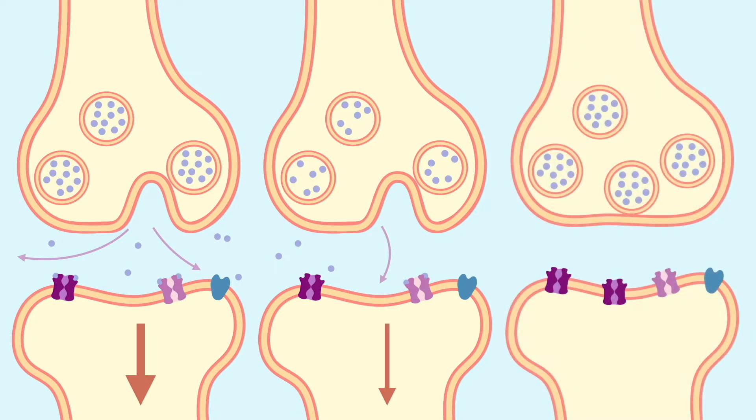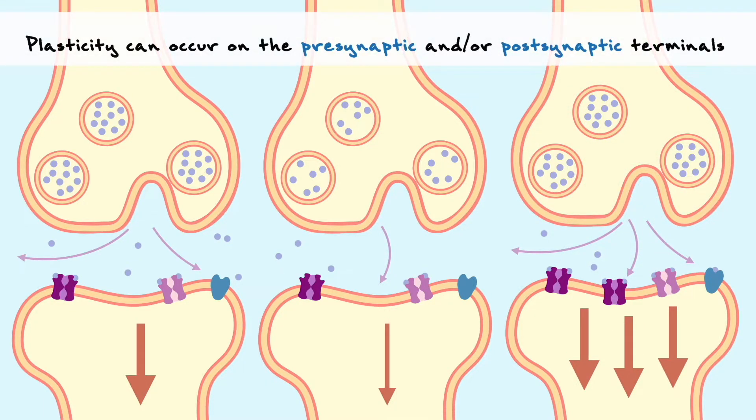We can also imagine on the postsynaptic cell, if there are more or less receptors to pick up the signal, the response will also be modulated accordingly. Hence, plasticity can occur on either the presynaptic and or the postsynaptic side.